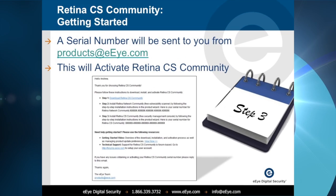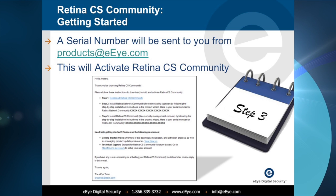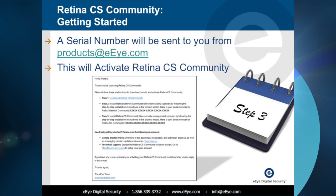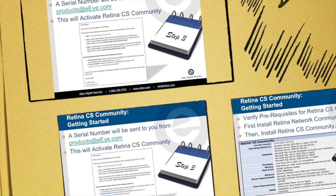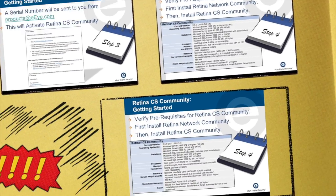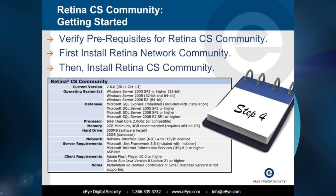While you have been downloading the Retina CS Community Edition, EI has sent you an email with the license keys for both the Retina Network Community Edition and Retina CS Community Edition. These will be needed to activate the products. Please verify that you have the proper version of the Microsoft Windows Server Operating System, and then install the Retina Network Community Edition first, followed by the Retina CS Community Edition.